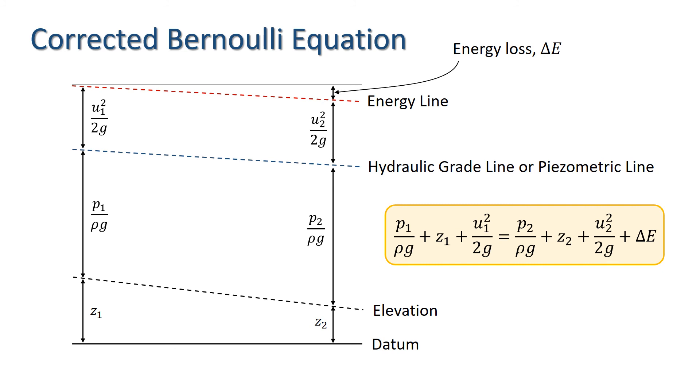This modified form of the Bernoulli equation is usually referred to as the corrected Bernoulli equation. The loss term takes into account energy spent in overcoming the friction resistance, continuous losses, or resistance due to factors such as changes in cross-sections or valves, the local losses.